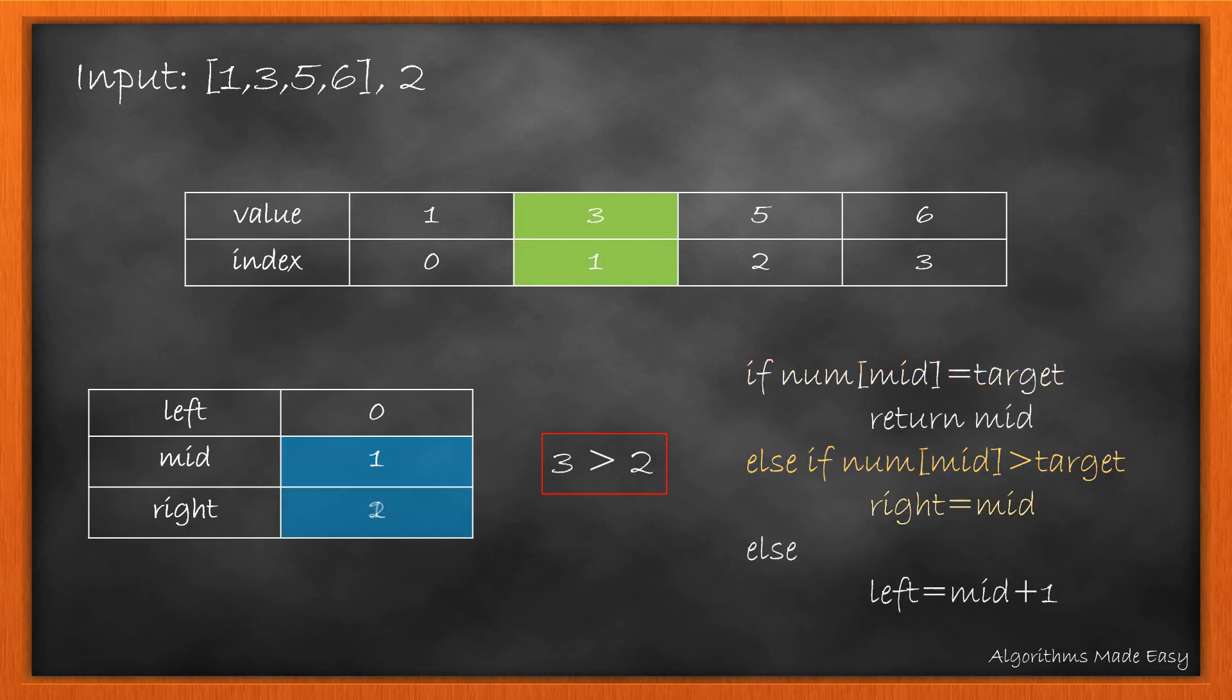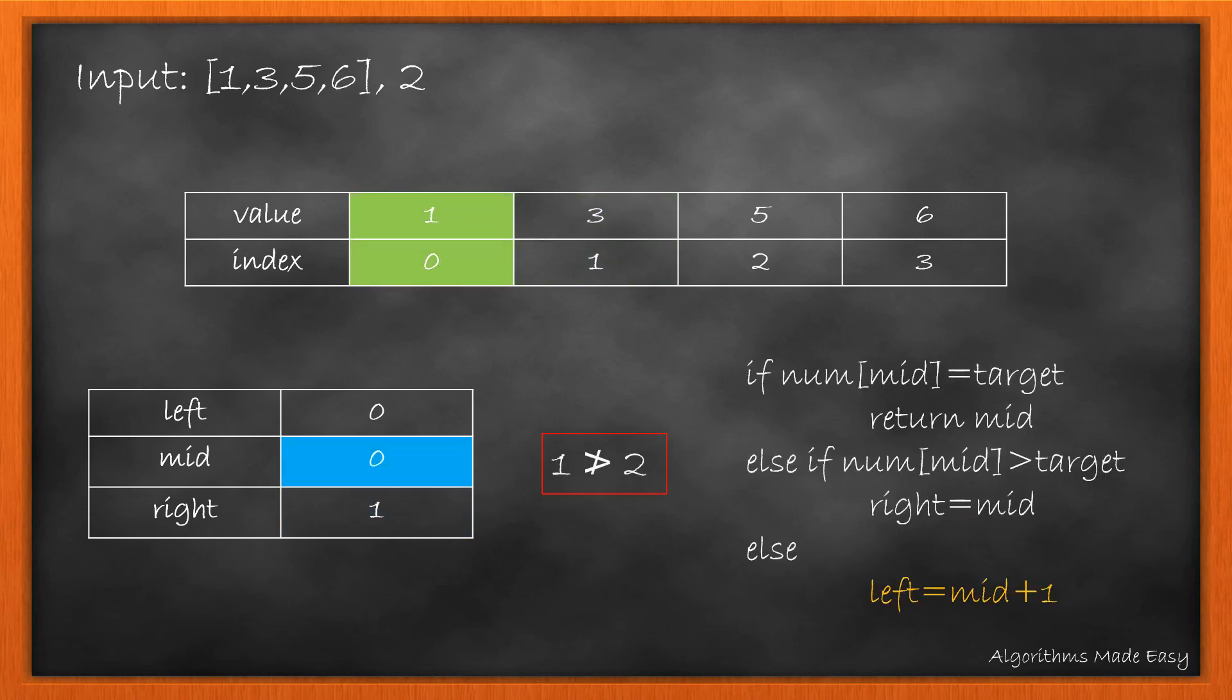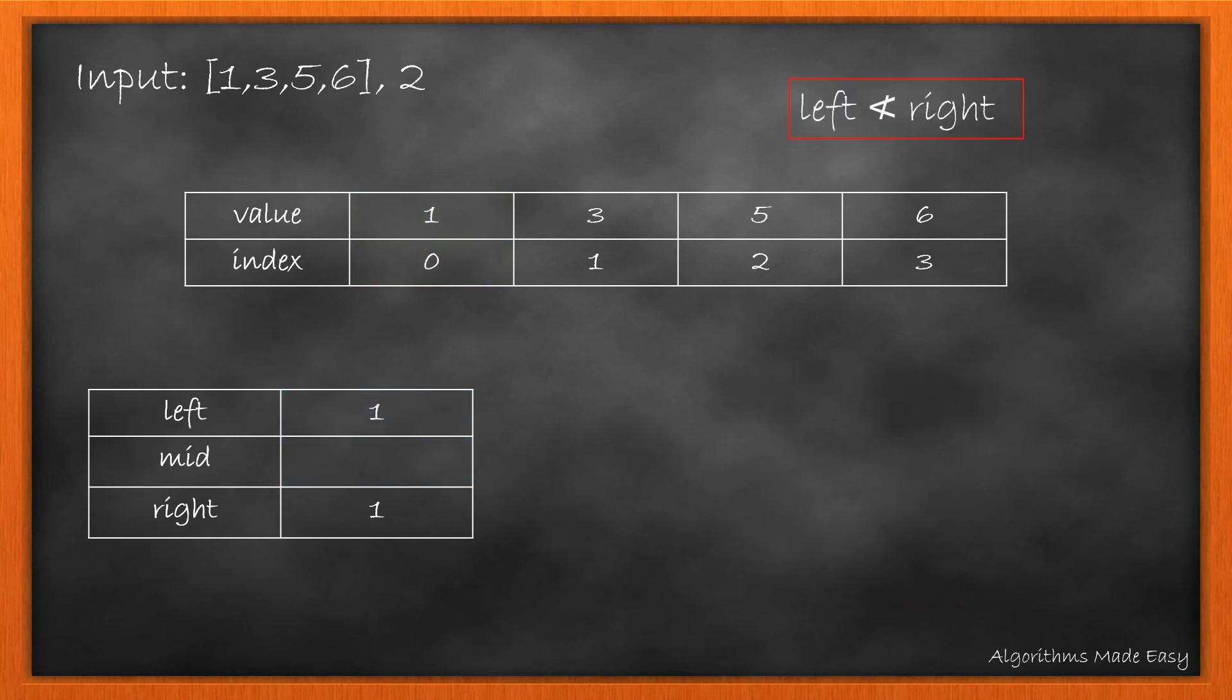As 3 is greater than 2 we update right. Still left is less than right, we calculate mid, check for condition and as 1 is less than 2 we update left to mid plus 1. Now left is not less than right so we break the loop and return left which is 1.